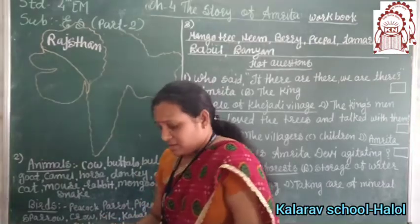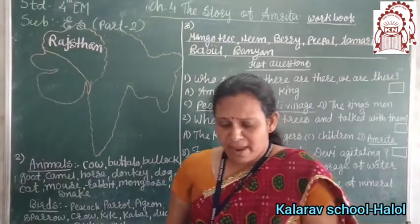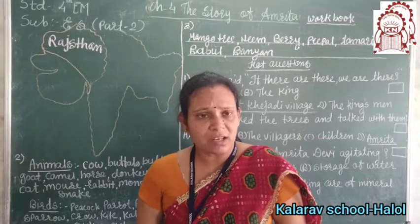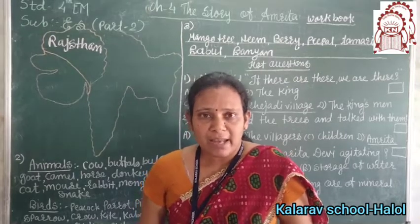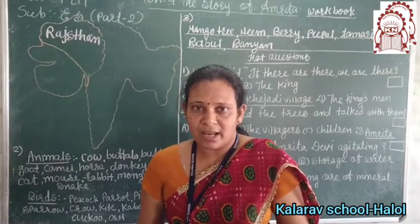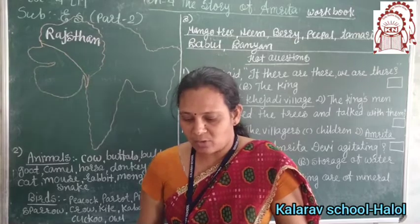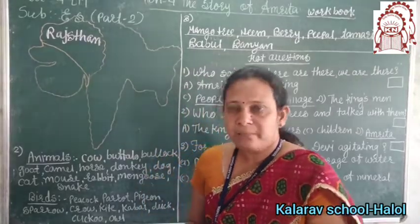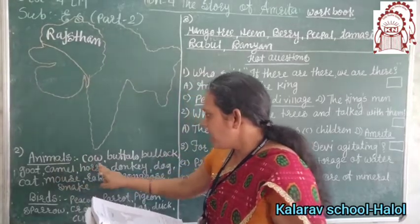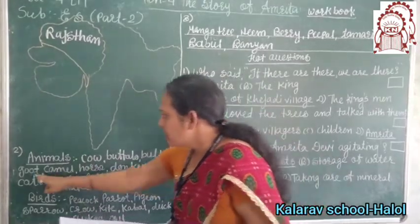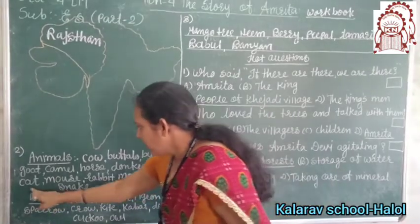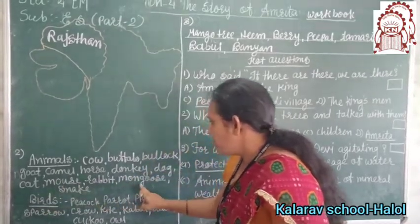The second activity is below the map: which birds and animals are seen in your village and in the outskirts? List out the animals and birds you have seen in your state, village, or outskirts. I write: cow, buffalo, turtle, goat, camel, horse, donkey, dog, cat, mouse, rabbit, camel, mongoose.